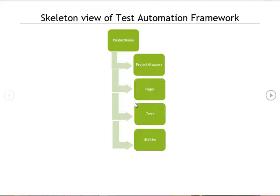The next directory is pages. Using the page object design pattern, we divide our project into pages — for example, home page, login page, reservation page, booking page, checkout page, and check-in page. Our entire UI is divided into pages.